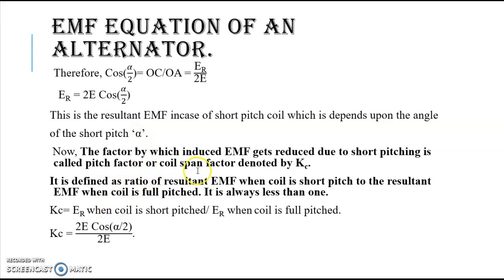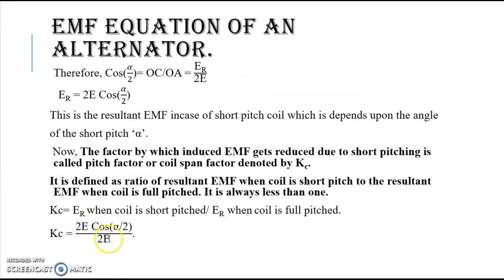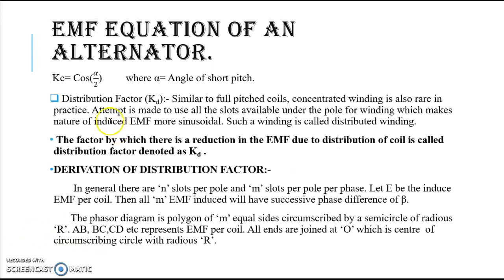The pitch factor or coil span factor Kc is defined as the resultant EMF when the coil is short pitched divided by the resultant EMF when the coil is full pitched. So Kc equals 2E·cos(alpha/2) divided by 2E. The 2E cancels, giving Kc equals cos(alpha/2), where alpha is the angle of short pitch.